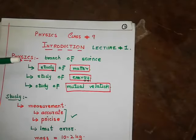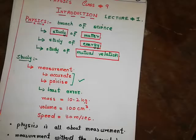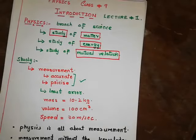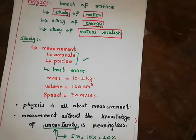We discussed that study in physics means to measure something — to measure the properties of matter, energy and their mutual relationships. That measurement should be accurate and precise, containing the least possible error. Physics is all about measurements, and measurements without the knowledge of uncertainty are meaningless.